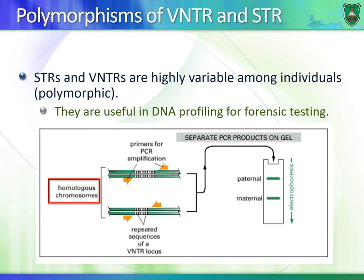This is a cause of polymorphism — different forms of DNA sequences. You can have different sequences of VNTRs and STRs on homologous chromosomes. This has been helpful in forensic testing, because we can differentiate samples of individuals from each other based on this polymorphism.